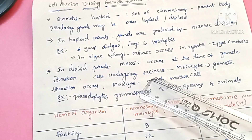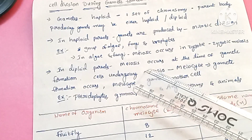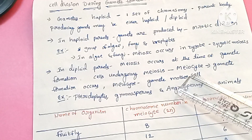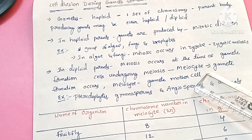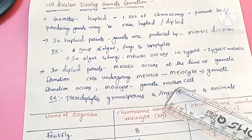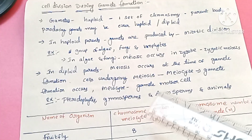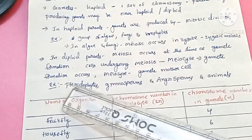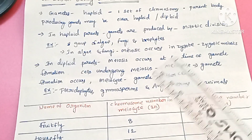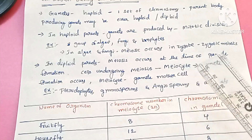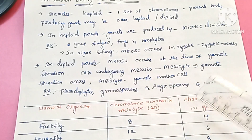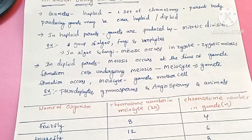When cells undergo meiosis, these cells are called meiocytes or gamete mother cells. Through the meiocyte, gamete formation occurs. After meiosis, haploid gametes are formed. When these haploid gametes fuse, a diploid zygote is formed. In this case, there is no need for zygotic meiosis.